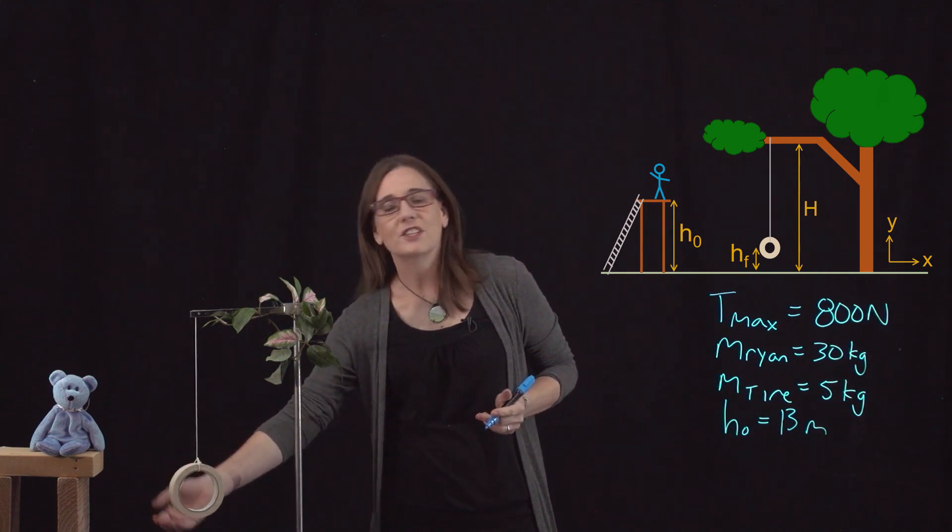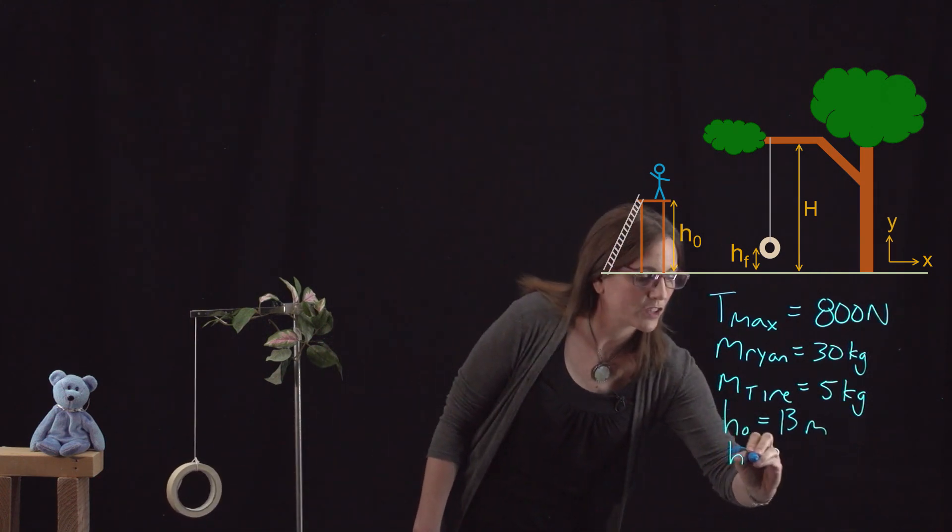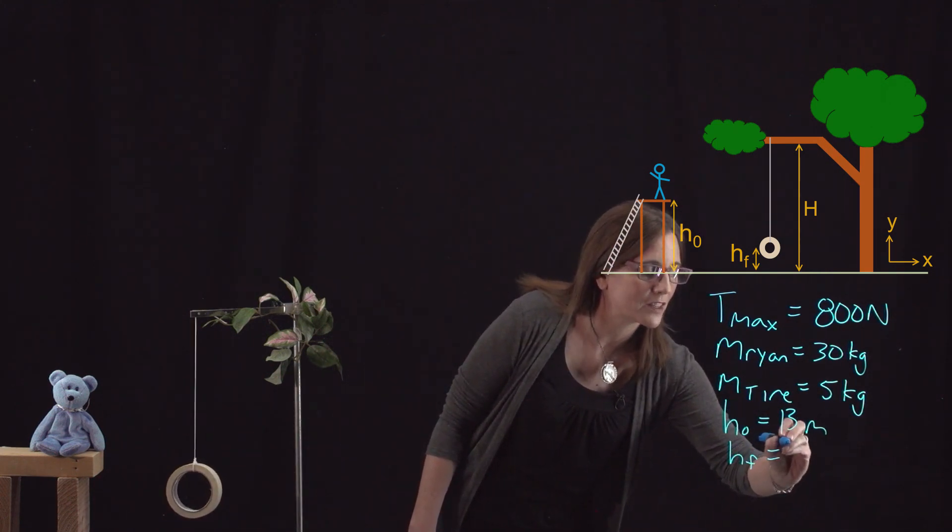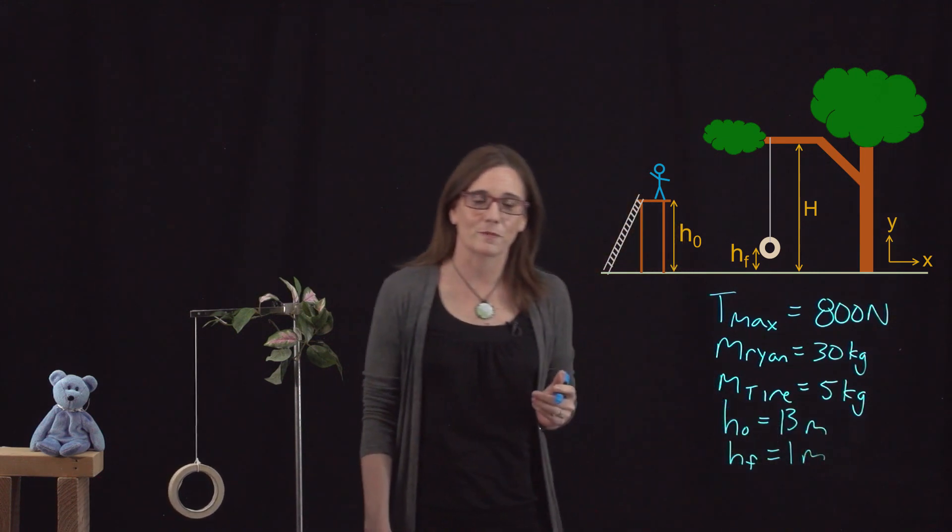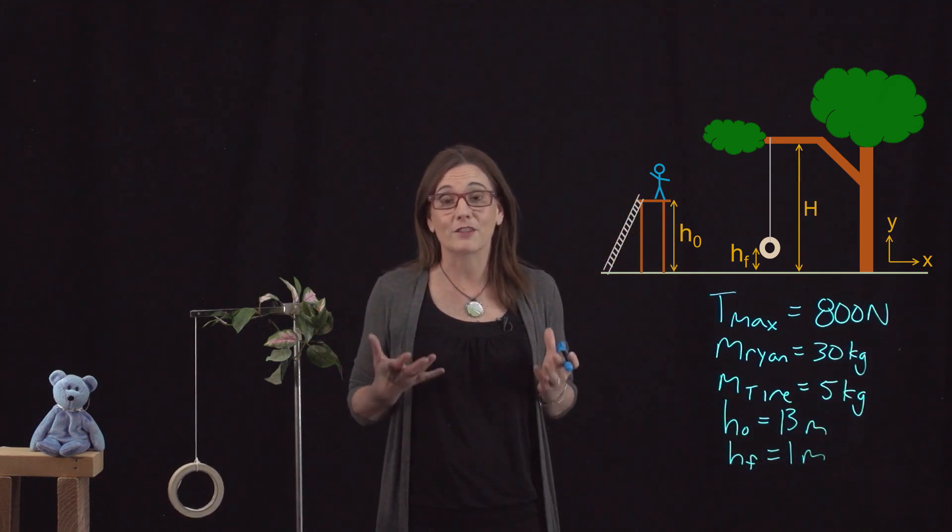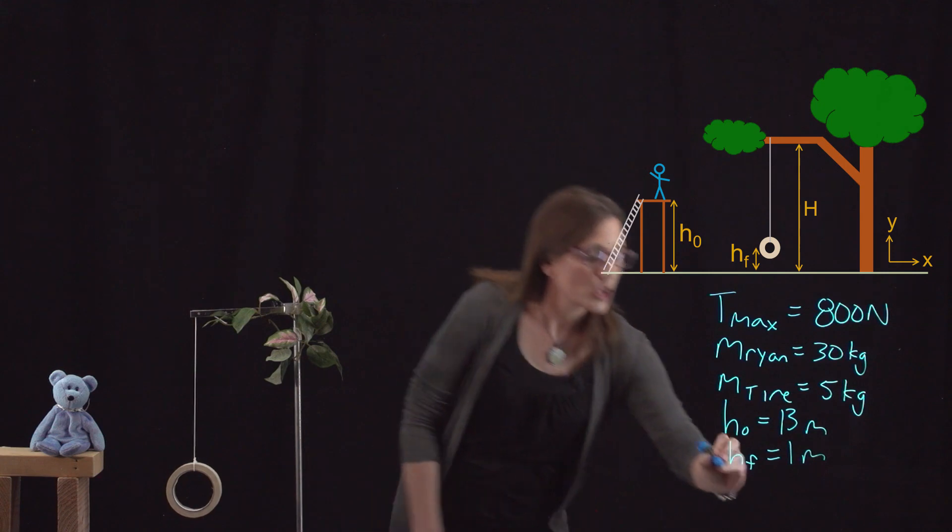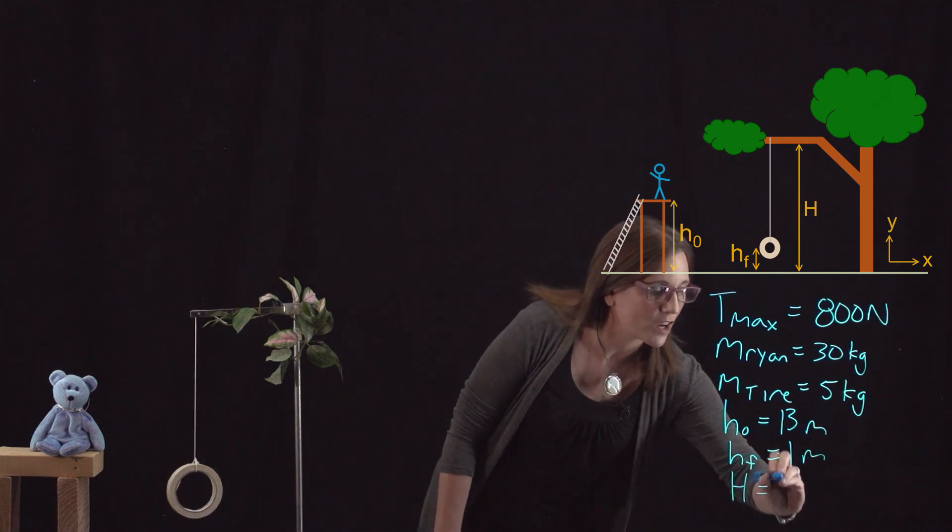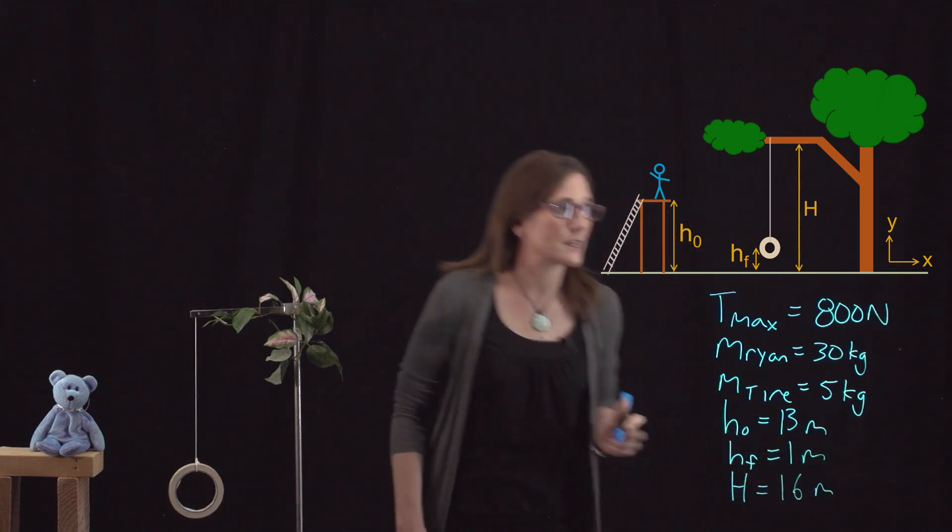You then measure the height of the tire above the ground, which we've called H final, H sub F, in the diagram. And that's 1 meter. You then measure the height of the tree branch above the ground, which is capital H in the diagram. And that was found to be 16 meters.